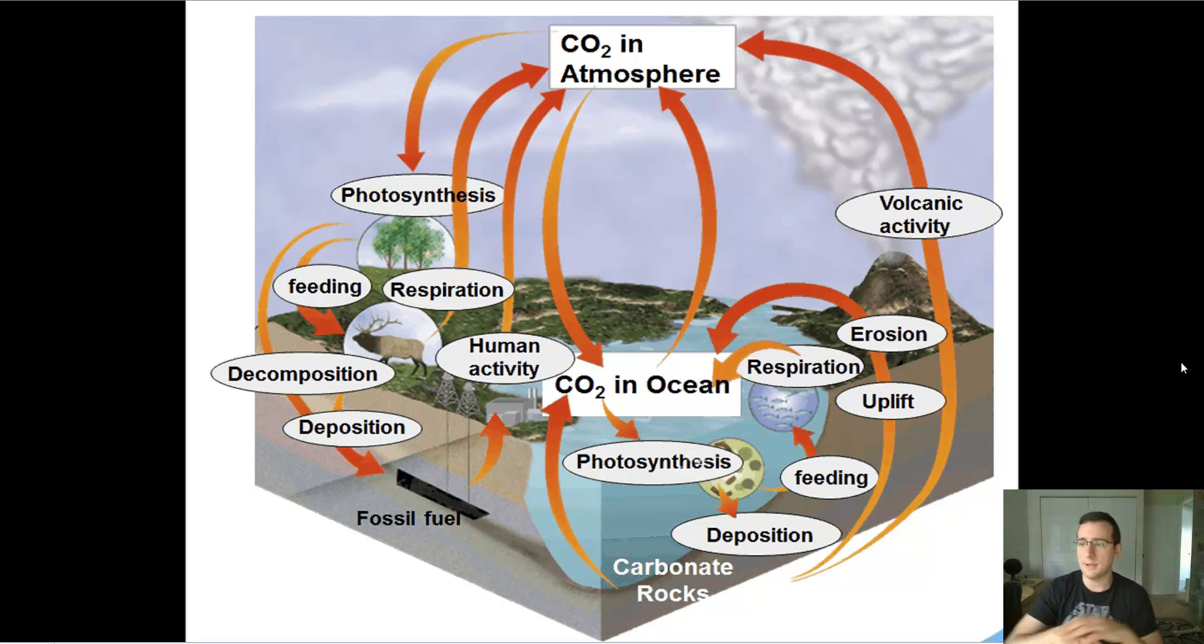Then feeding transfers the carbon dioxide throughout the food web. Cellular respiration, when animals and plants do their activities, releases that back into the atmosphere. When things die, the carbon that's in the carcass gets decomposed and also released into the atmosphere. It is possible, though, that some of that carbon from the decomposition process actually stays in the soil.